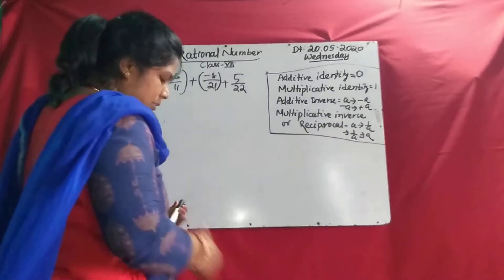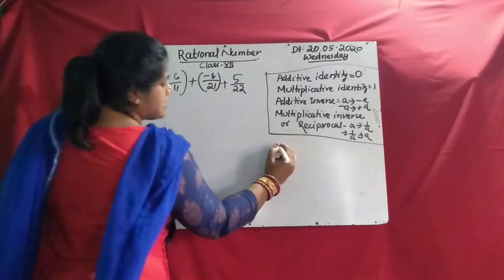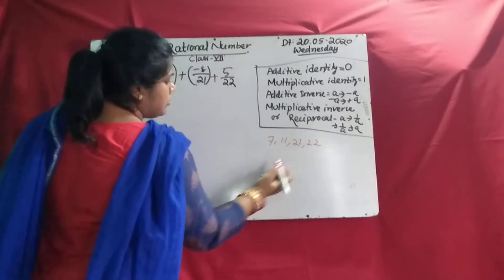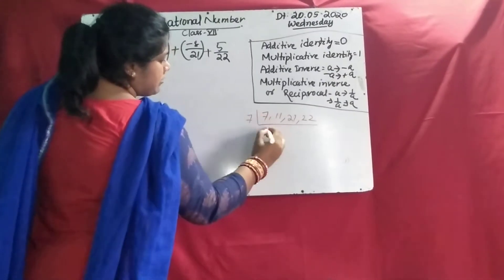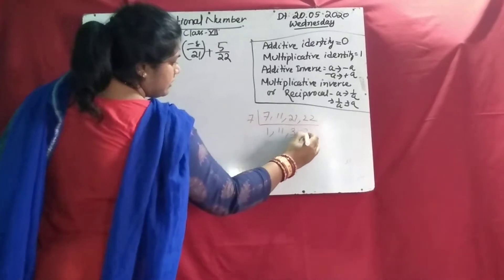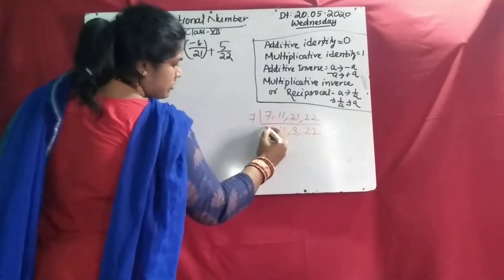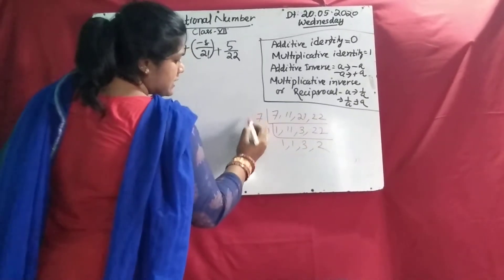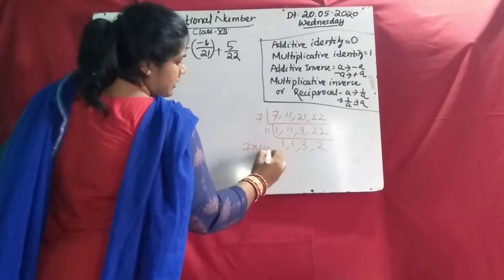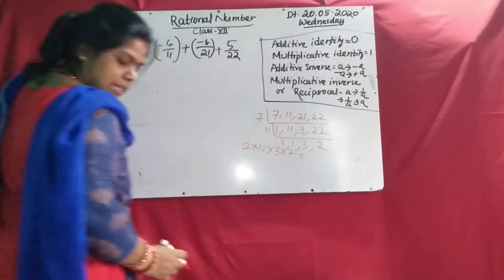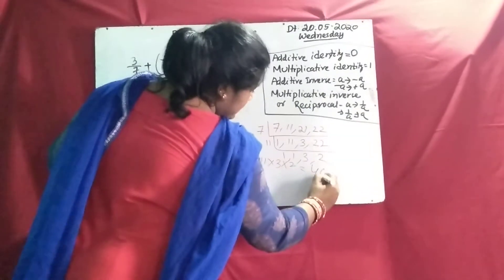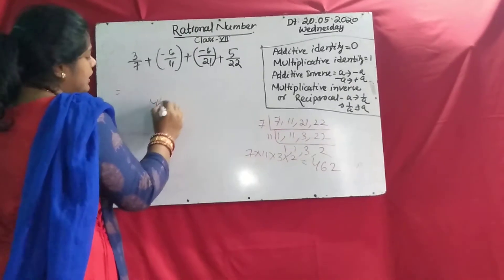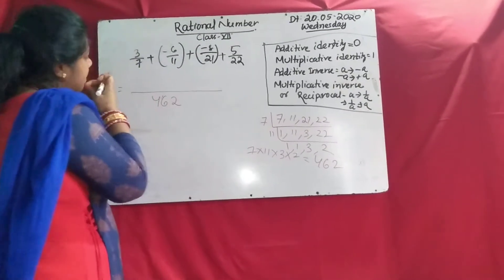If you find out the LCM of 7, 11, 21, and 22 — taking 7, 11, 21, 22 — you multiply 7 by 11 by 2 and you will get the answer 462. So here LCM is 462, and you can add here.